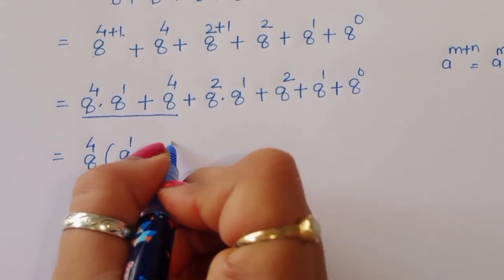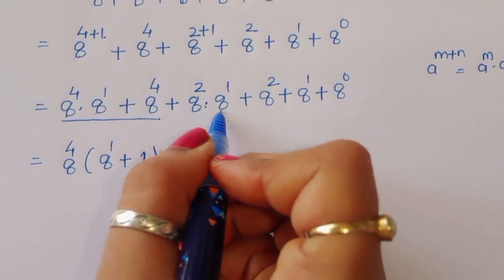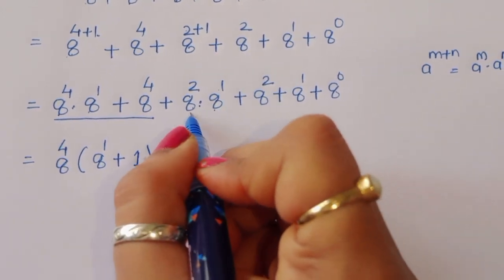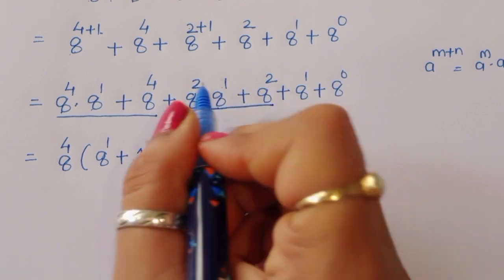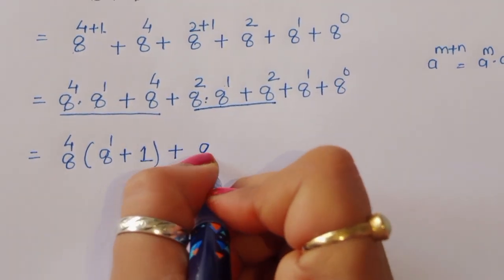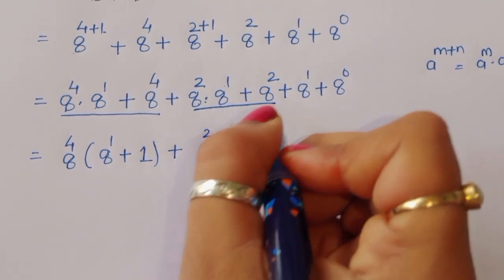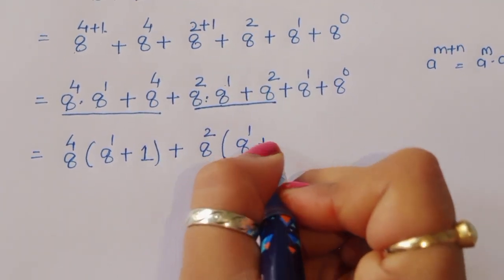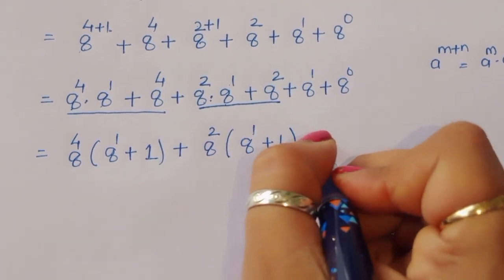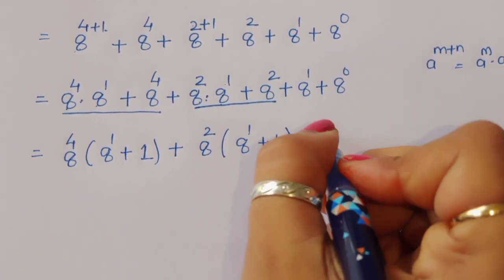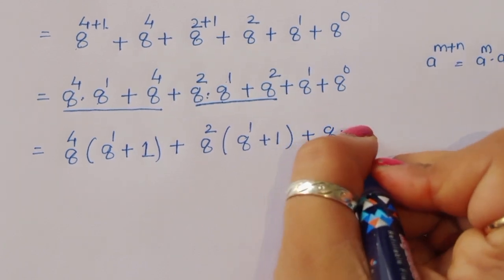Taking 8 power 4 common, we get 8 power 1 plus 1, and the left term is 1. Then in the remaining terms 8 power 4 plus 8 power 4, we can take common 8 power 2. So 8 power 2, and the left term is 8 power 1 plus 1. Now 8 power 1 is 8 and 8 power 0 is 1.